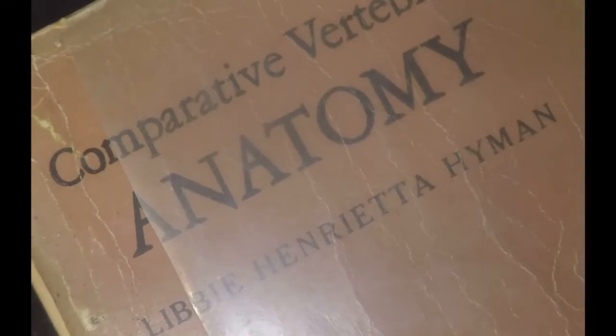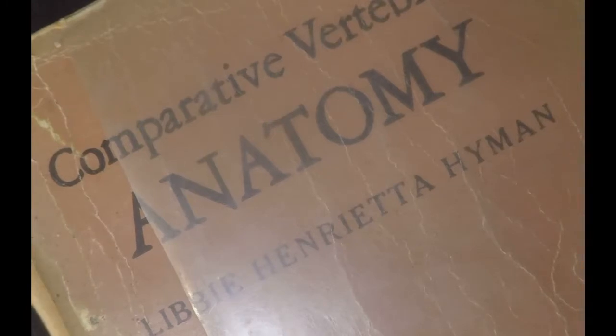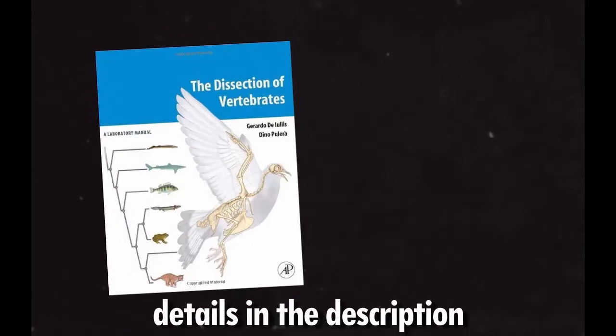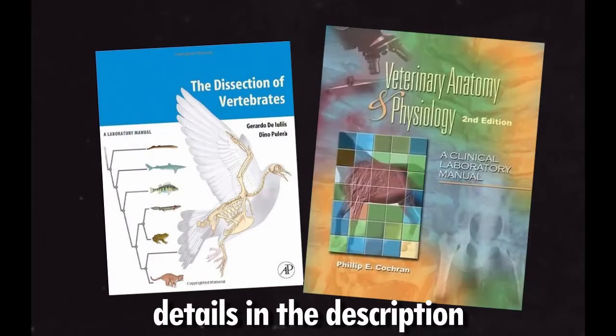For the terminology and names of the bones that we will discuss, we will mostly be using this book — Comparative Anatomy by Libby Henrietta Hyman. This is basically the bible of comparative anatomy from which most contemporary atlases and lab manuals are based. I will also provide supplementary sources: the manuals by D. Eulis and another one by Cochrane.